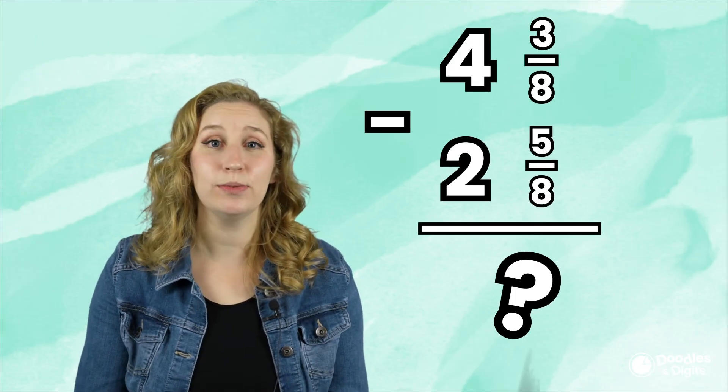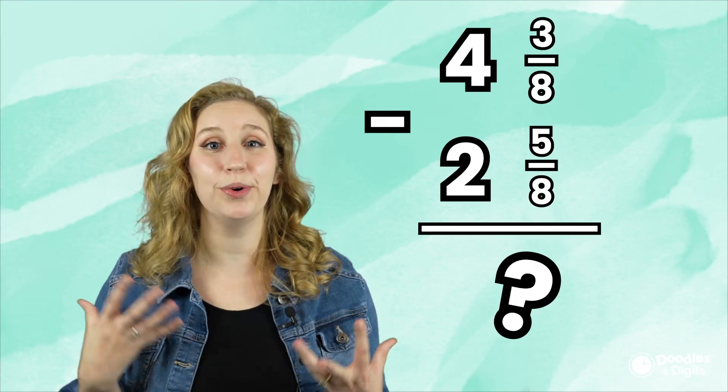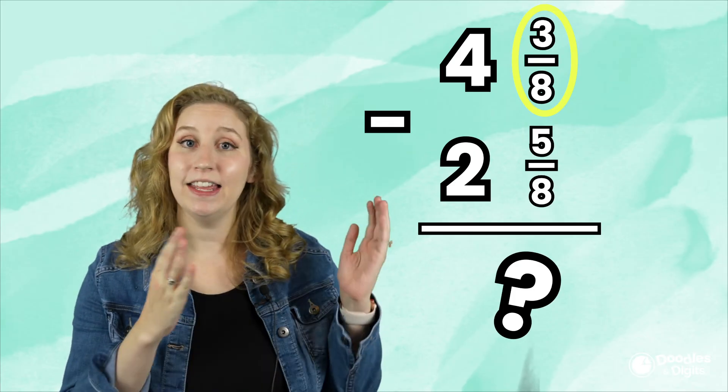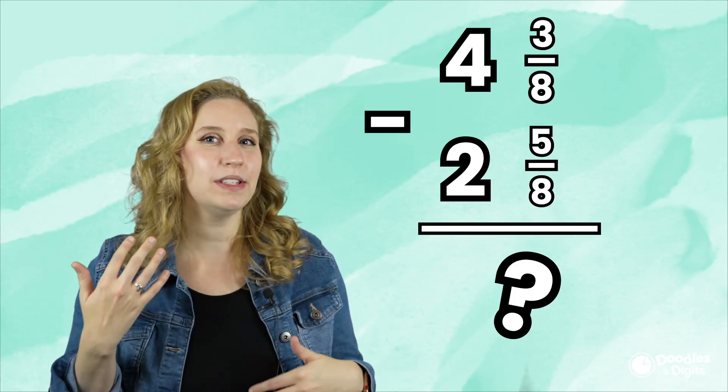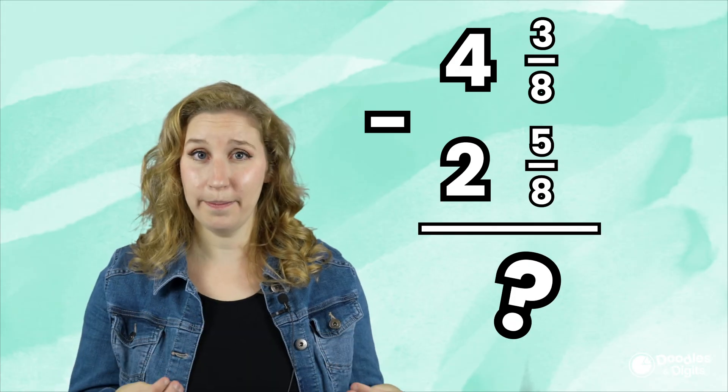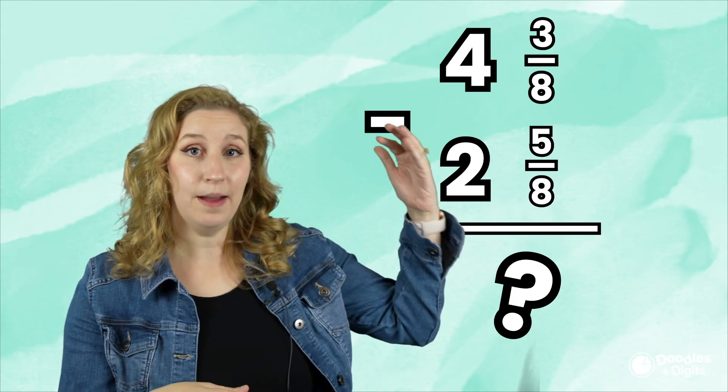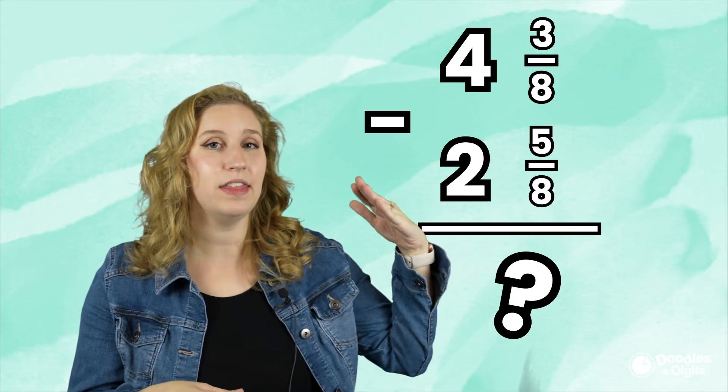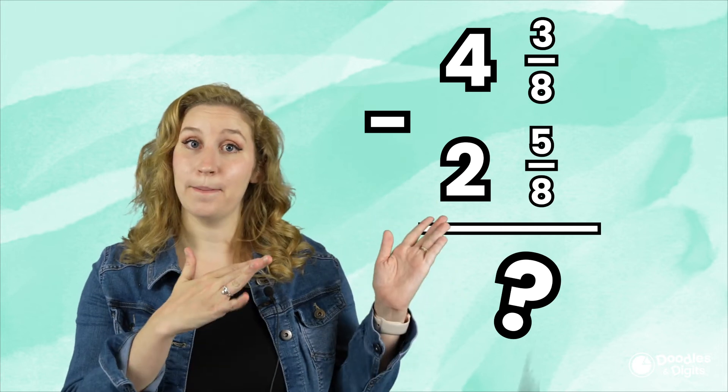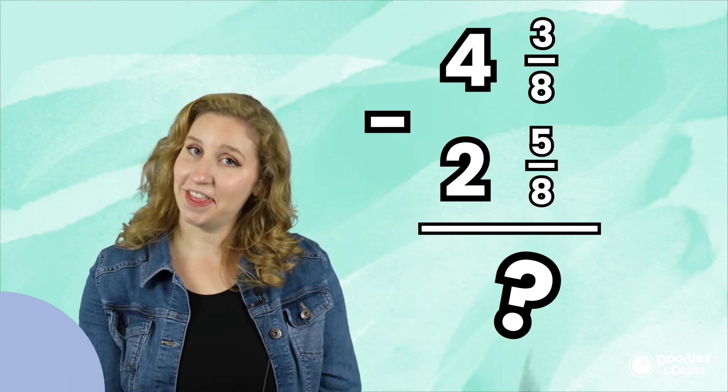Something that's really tricky that sometimes happens is when you're subtracting, you have to regroup mixed numbers. For example, like this. Just like when we're subtracting with whole numbers, if the number on top is smaller than the number below, you're going to have to borrow from the whole number. But that's a lesson for another day.